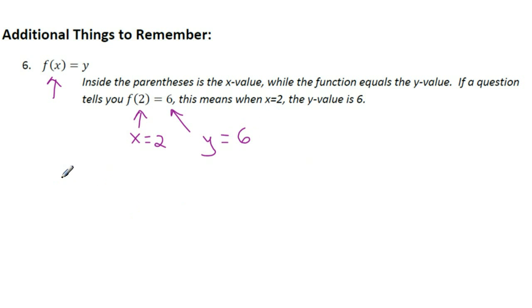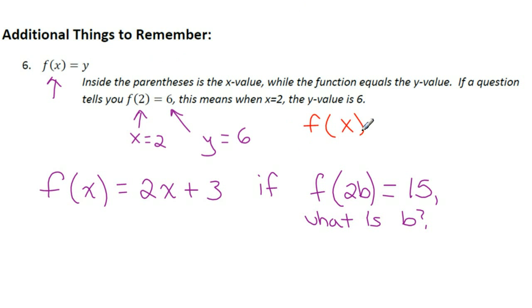This is really important, especially if they give you an equation like f of x equals, let's just say, 2x plus 3. And it says, if f of 2B equals 15, what is B? In this case, we have to remember f of x is y. So f of x is y. So what we're saying here is the y value is 15 and x is 2B. So when you go back here, you can kind of think of this function as y equals 2x plus 3. And now all you need to do is substitute in these values here. So we said y is 15, so we make the y 15. And then we switch our x, so the x becomes 2B. So 2B plus 3. And now we can solve this like a normal problem.